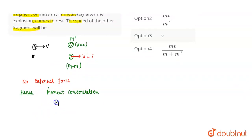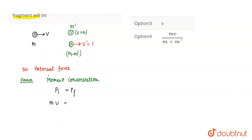Moment conservation क्या कहता है - initial moment is equals to final moment। Initial हमारे पास bomb का mass M था, velocity V थी, तो initial moment m×v होगा। Final moment अगर देखें तो m' mass rest में था तो velocity 0, plus दूसरा fragment m-m' mass का था velocity v' से जा रहा था।